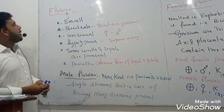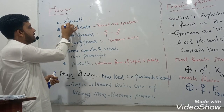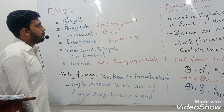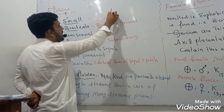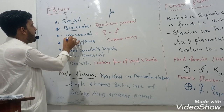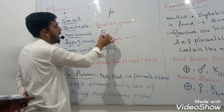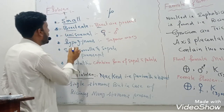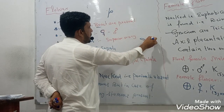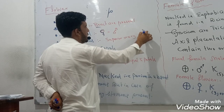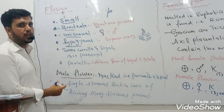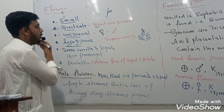Regarding the flower and family: the flowers are small. Bracts are present in this family — bracts are extra leaf-like structures which give protection to the flower in bud condition. The flowers are unisexual, meaning male and female flowers are separate. The hypogynous condition is also found — the ovary is superior to the calyx, petals, and stamens.